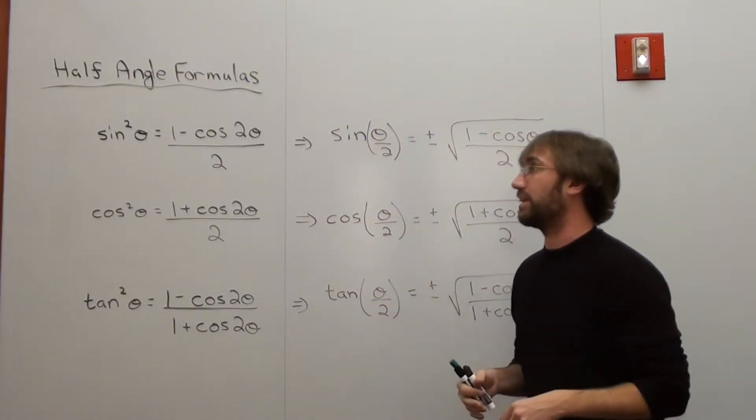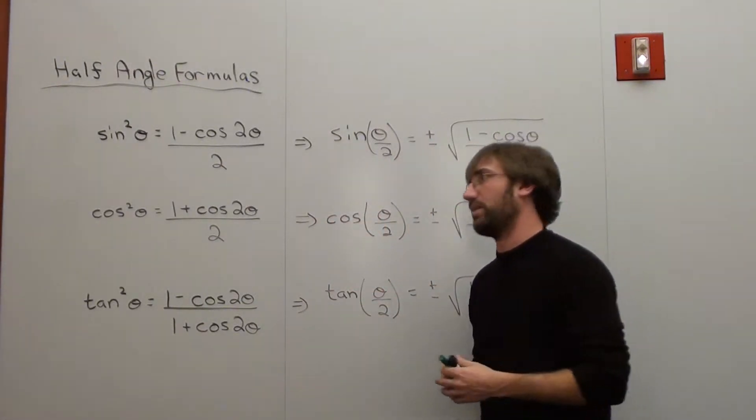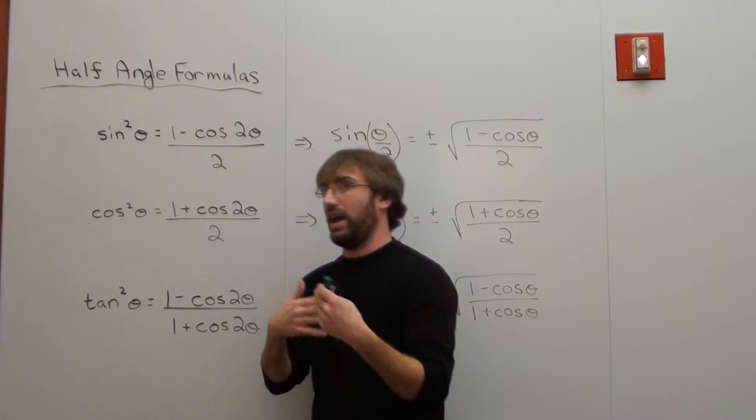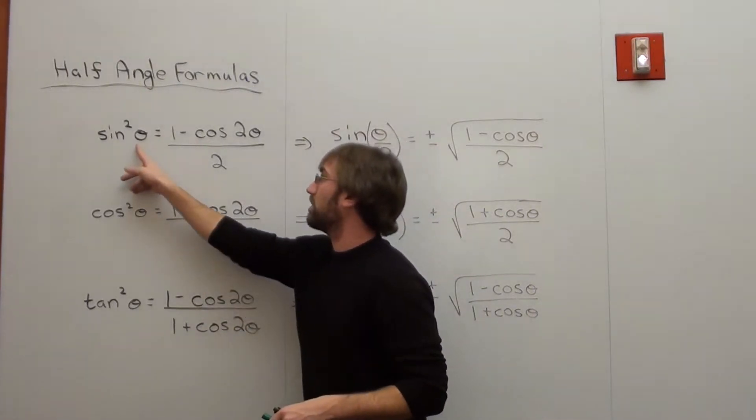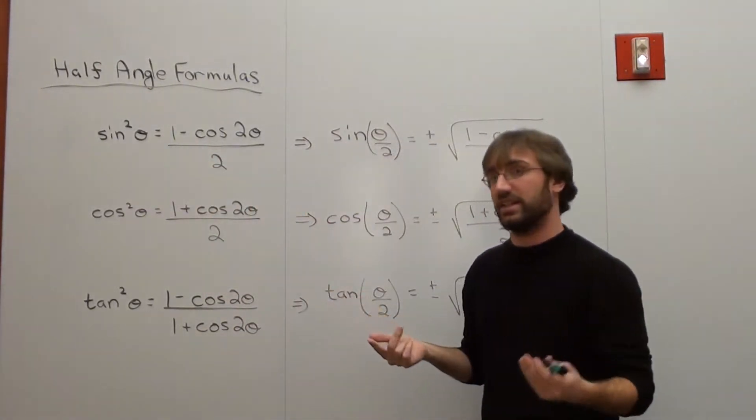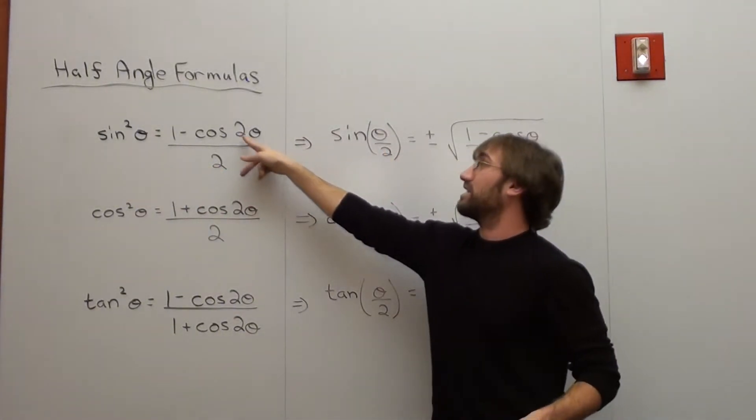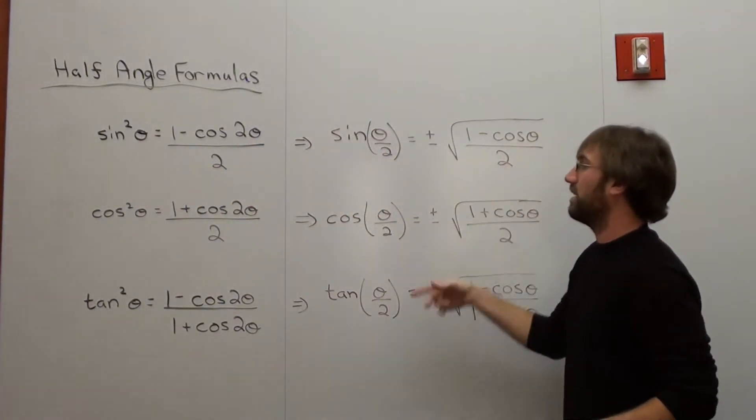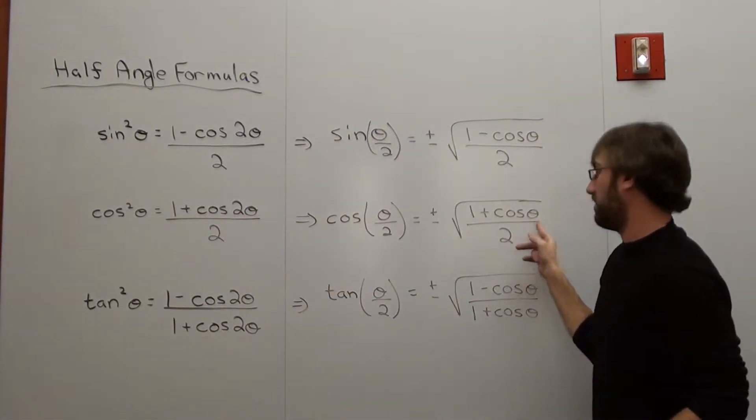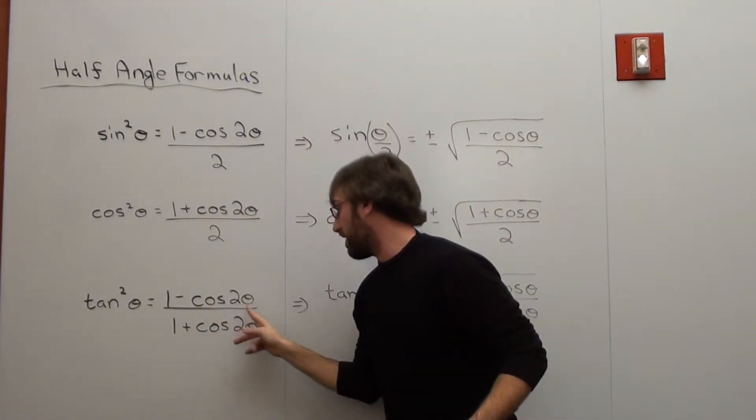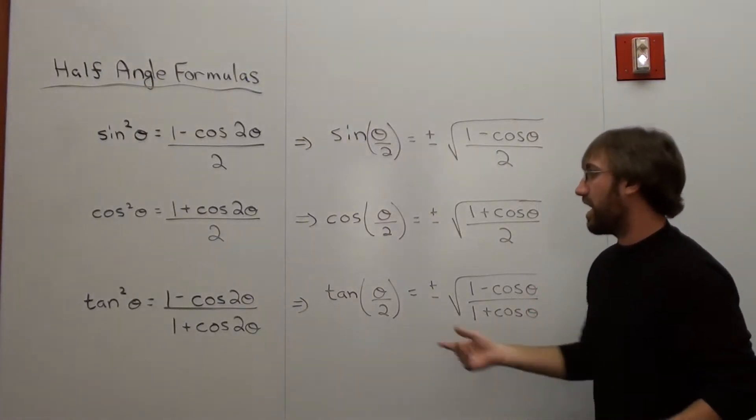want to figure out what half the angle is, basically what I'm going to do is cut each theta that I see in half. So if this was θ, it's going to be θ/2, and since this was 2θ, it's going to be θ. Same thing here: θ/2, θ. And θ/2, θ, θ. Now actually,